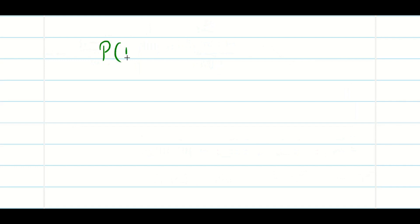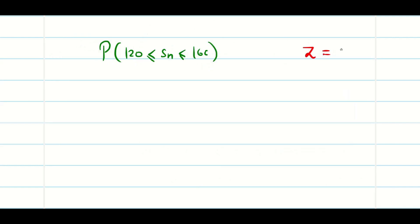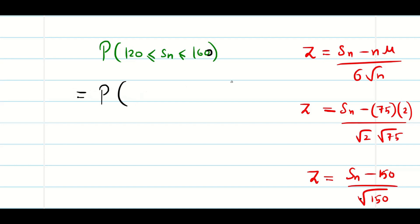It is an open problem. What is the probability of Sn lies between 120 to 160? First of all, we will write Z equals Sn minus n mu divided by sigma into root n. Sn we are going to use from the problem. n is 75, mu is 2, sigma is root 2, root n is 75. My Z is going to be Sn minus 150 divided by square root of 150. Now use your calculator. Immediately we have to draw the normal curve.